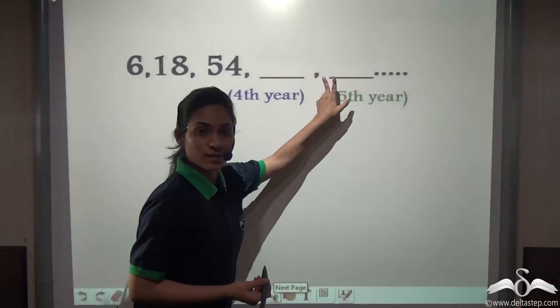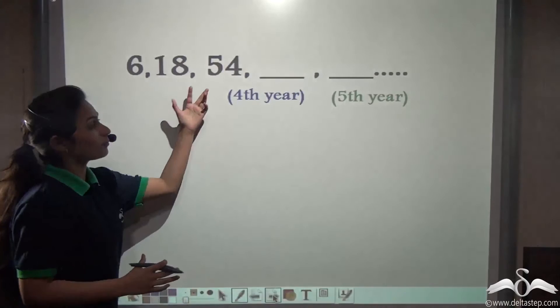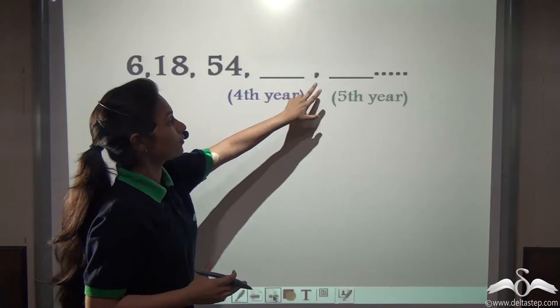So now you know that this follows a GP series. But we do not know how many seeds did she plant in the fourth year and the fifth year. So you can say that this is a fill in the blank for missing GP series. Can you complete this blank for me? Find out the fourth term and the fifth term of this GP series.